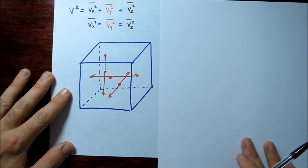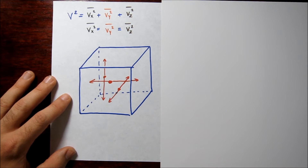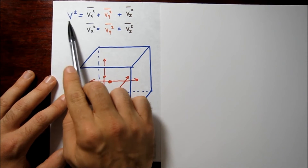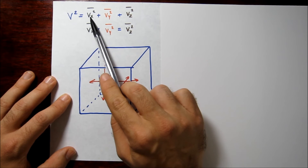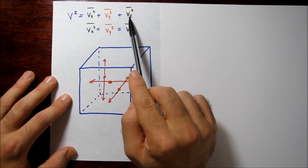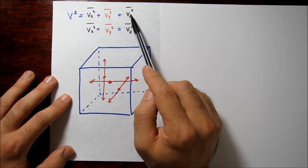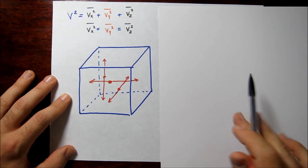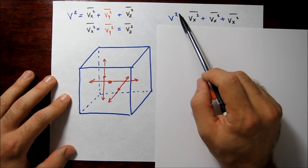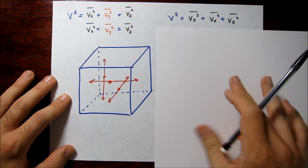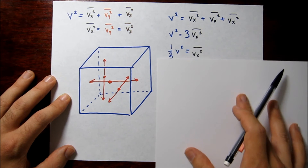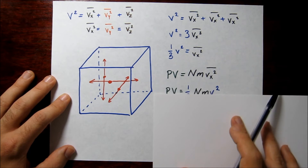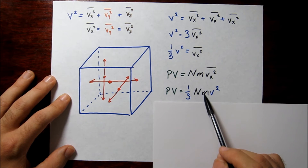So far we only considered particles moving in the x direction. An arbitrary velocity v can be decomposed into its x, y, and z components. Since there's no reason to prefer any direction, we assume v_x squared equals v_y squared equals v_z squared. The total squared velocity is the sum of the three components, so v_x squared equals one-third v squared. Substituting back in, we get PV equals one-third Nmv squared.